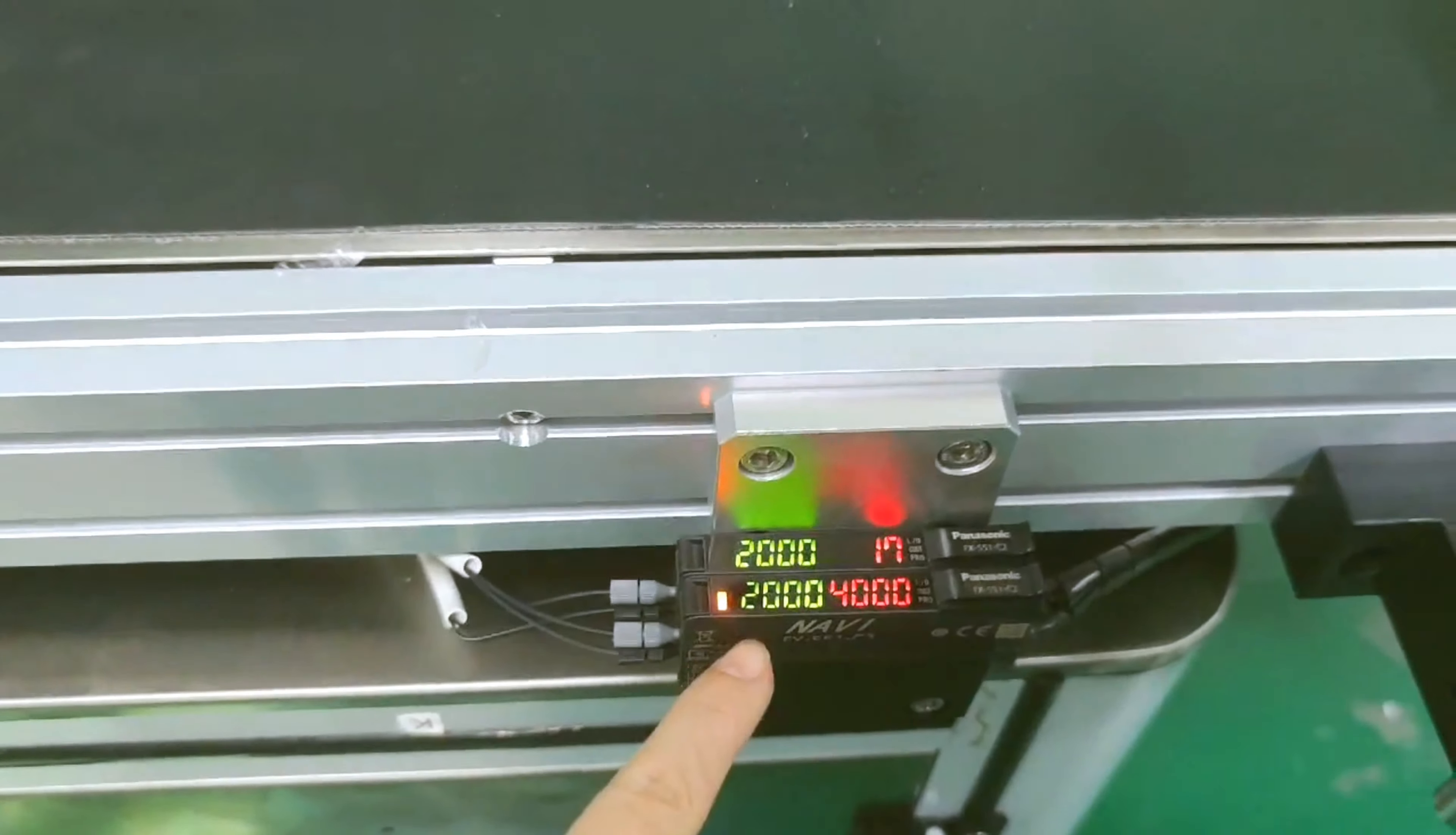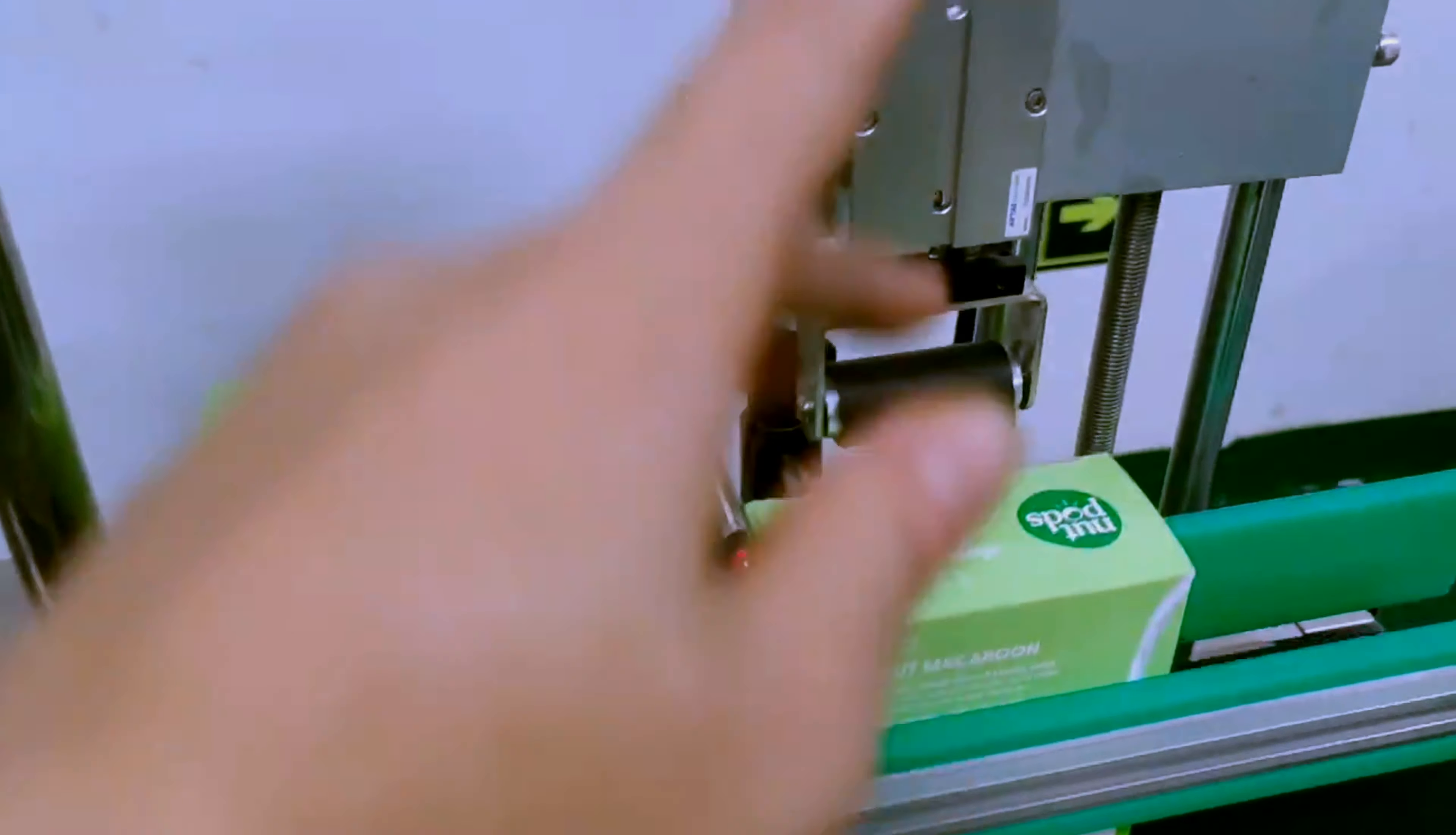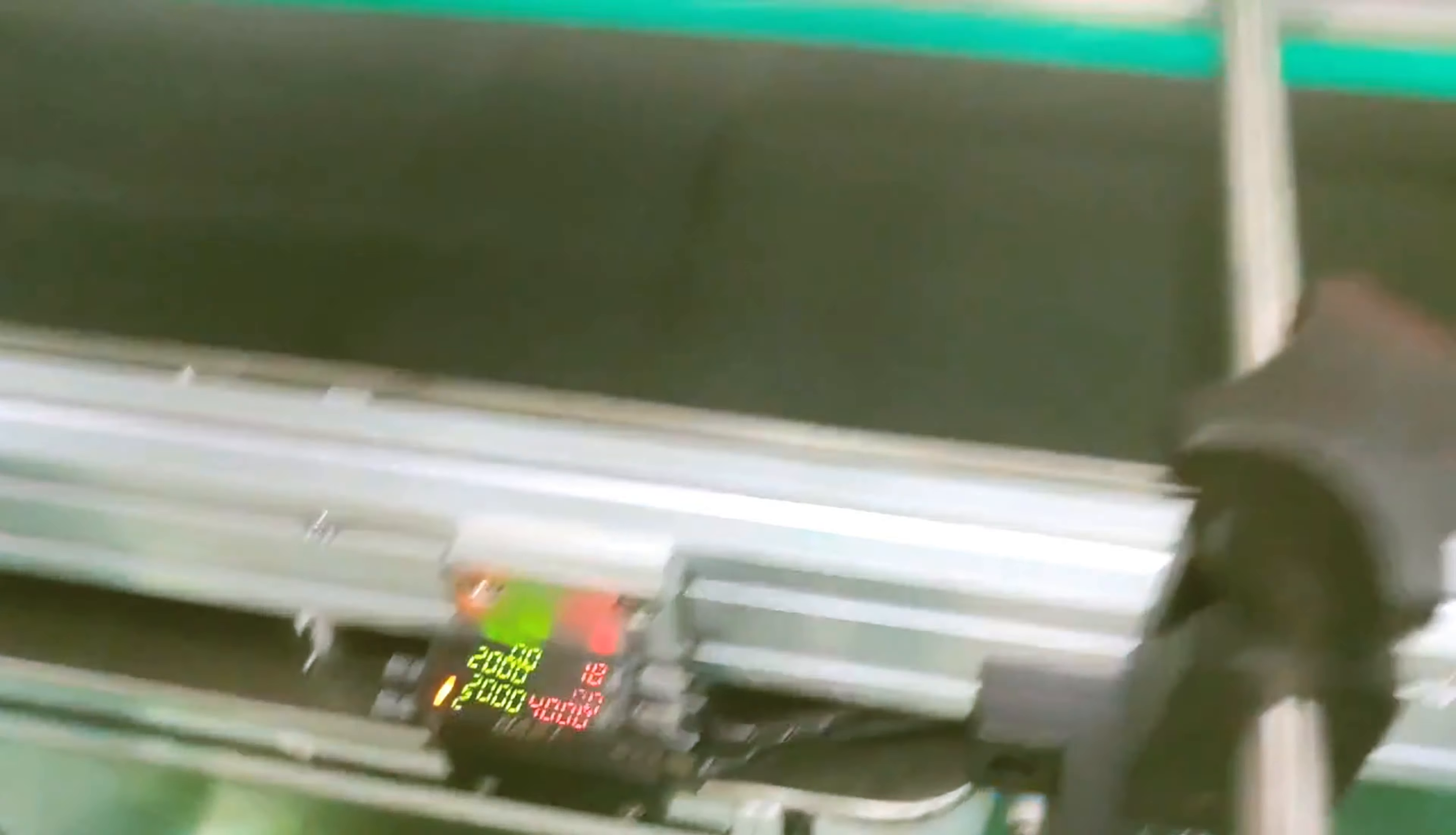For this sensor, it is checking the corner sealing items. Now you can see the corner sealing cylinder will be up when we get the signal. Like this here.